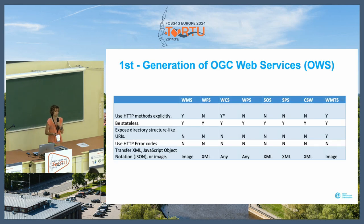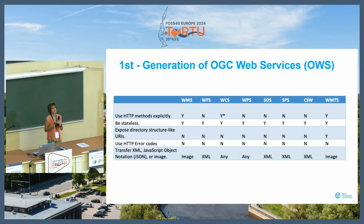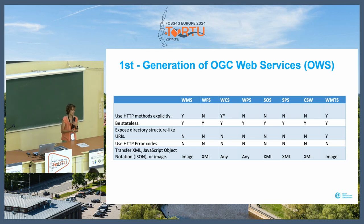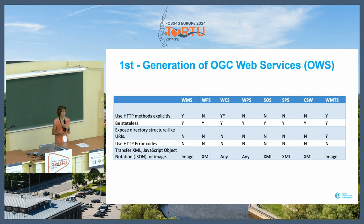This was what we call the first generation of OGC web services, and they had some characteristics that tell us what technology was used at that time — basically, there was the use of XML encoding and so on. Things have changed in the meantime, in the last 20 years, and this is no longer the type of technologies that we see in the mainstream web.